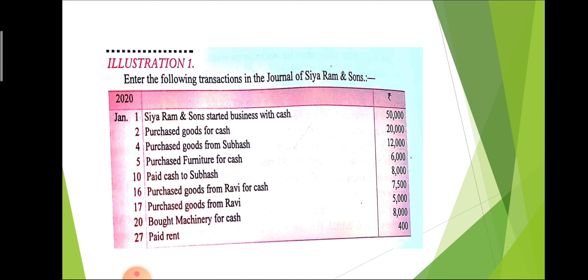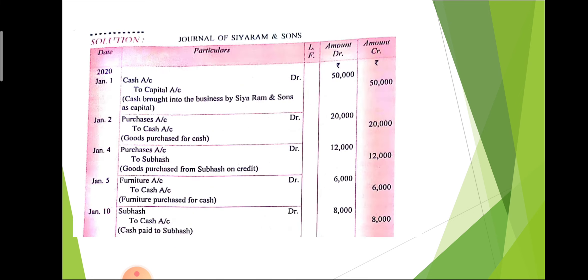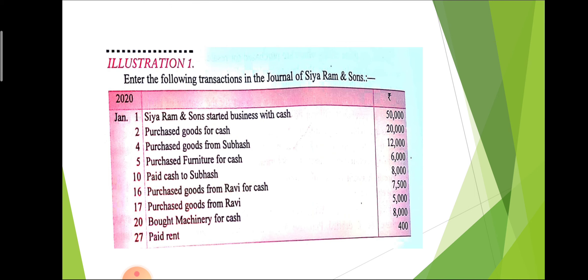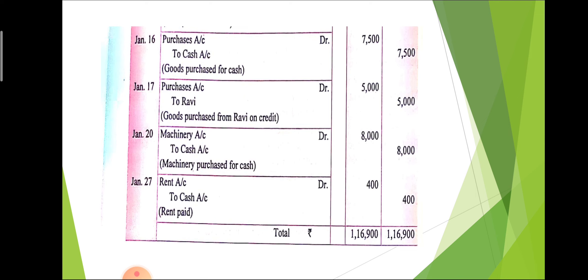Next entry: purchase goods from Ravi for cash. Here both the name Ravi and cash are given, so we give priority to cash. We purchase goods so we use the word purchase, and the journal entry is: purchase account debit to cash account. The following entry: purchase goods from Ravi — here only the name is mentioned, so the journal entry is: purchase account debit to Ravi, on January 17th.